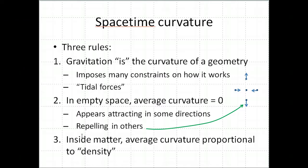Number three is that inside matter, inside the Earth, for example, the average curvature is going to be attractive. It's not going to average out to zero. And the amount of that average curvature is basically proportional to the density, meaning the density of mass energy. There's a lot of other things about the fact that it's all happening in different directions that makes it complicated. But roughly, it's that the average curvature is proportional to the density.